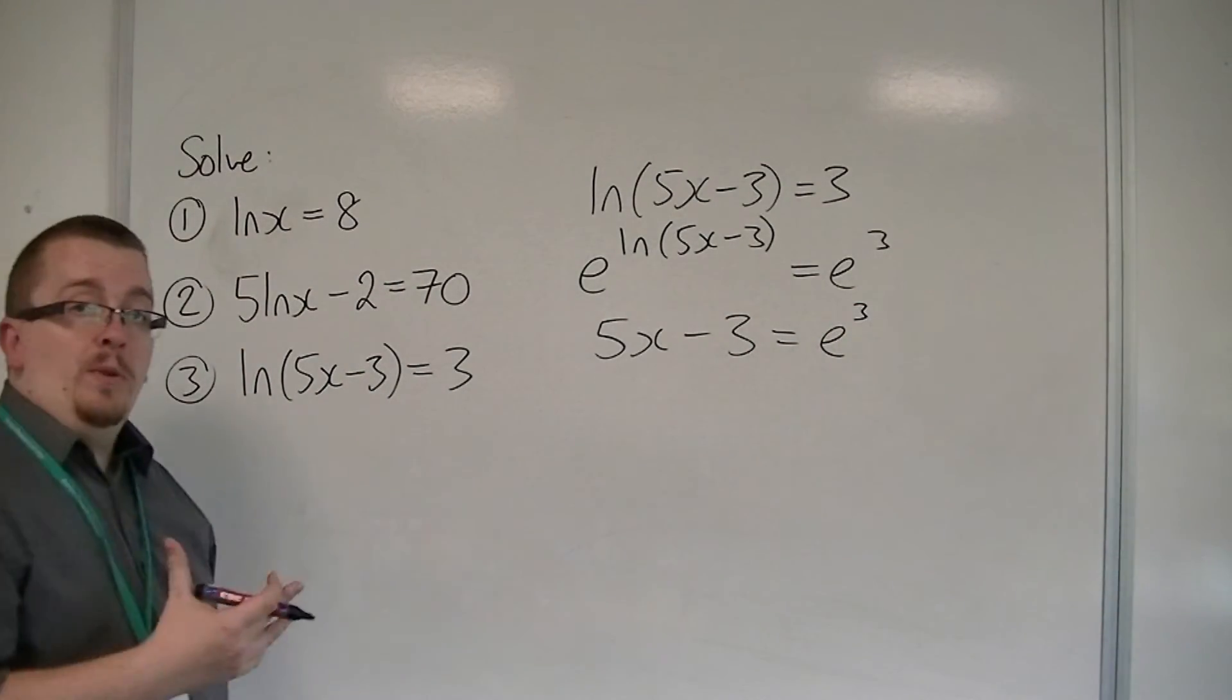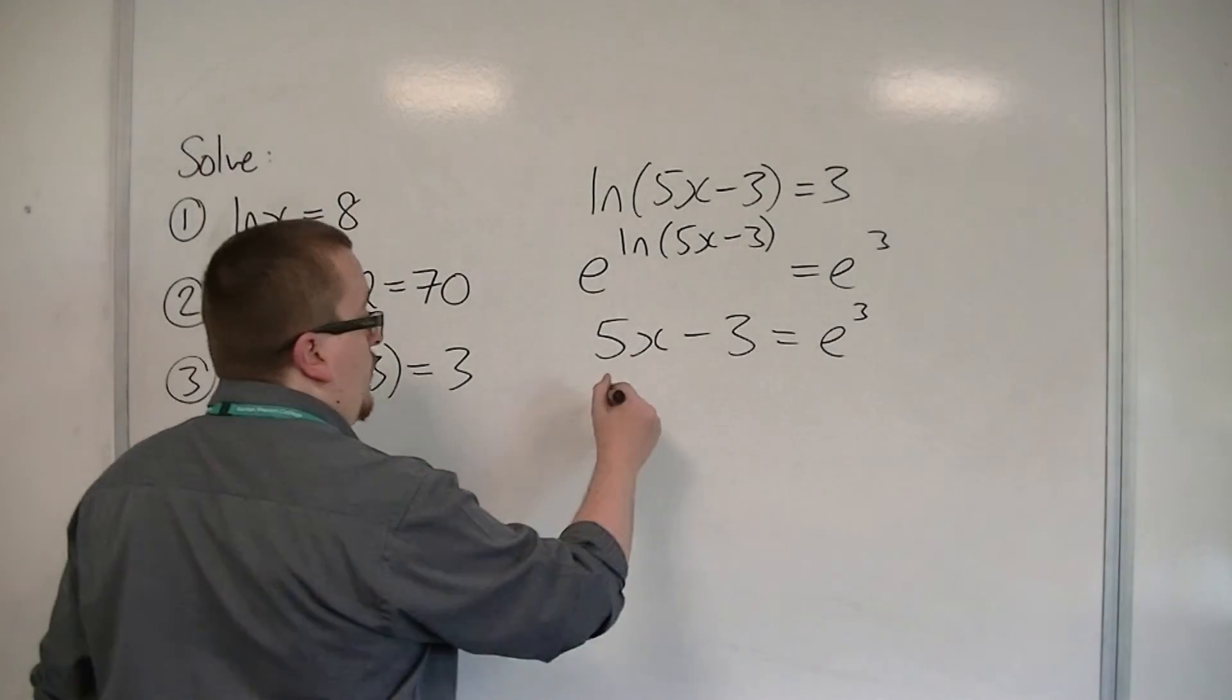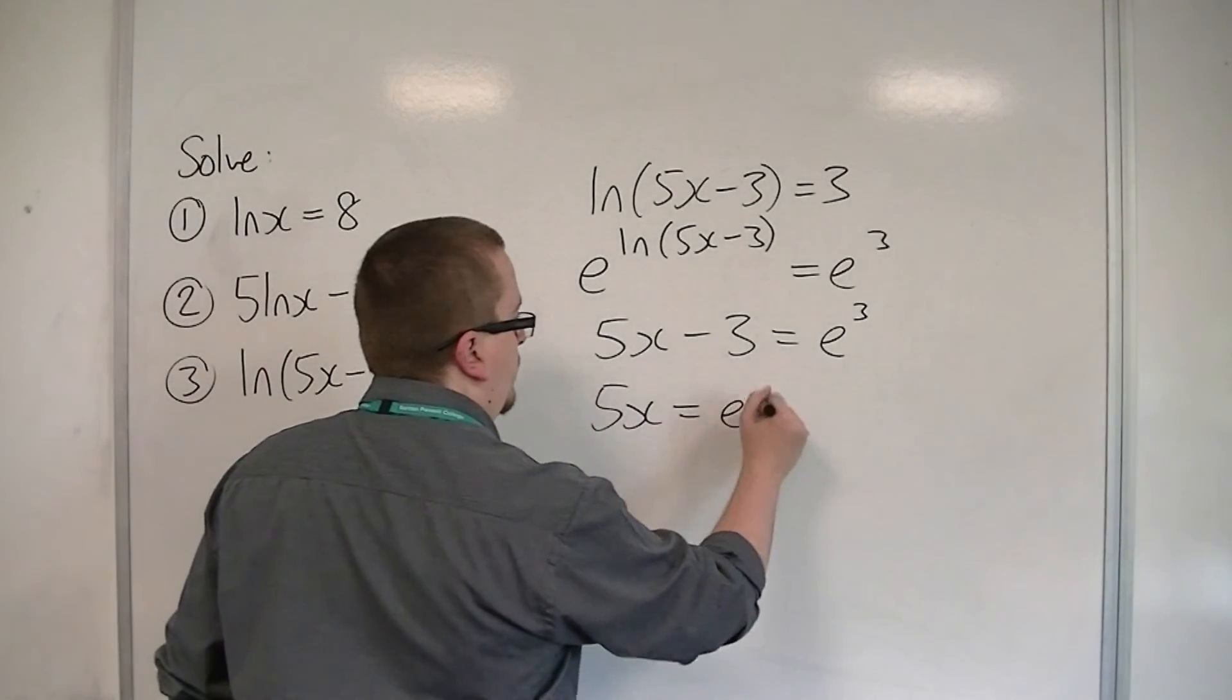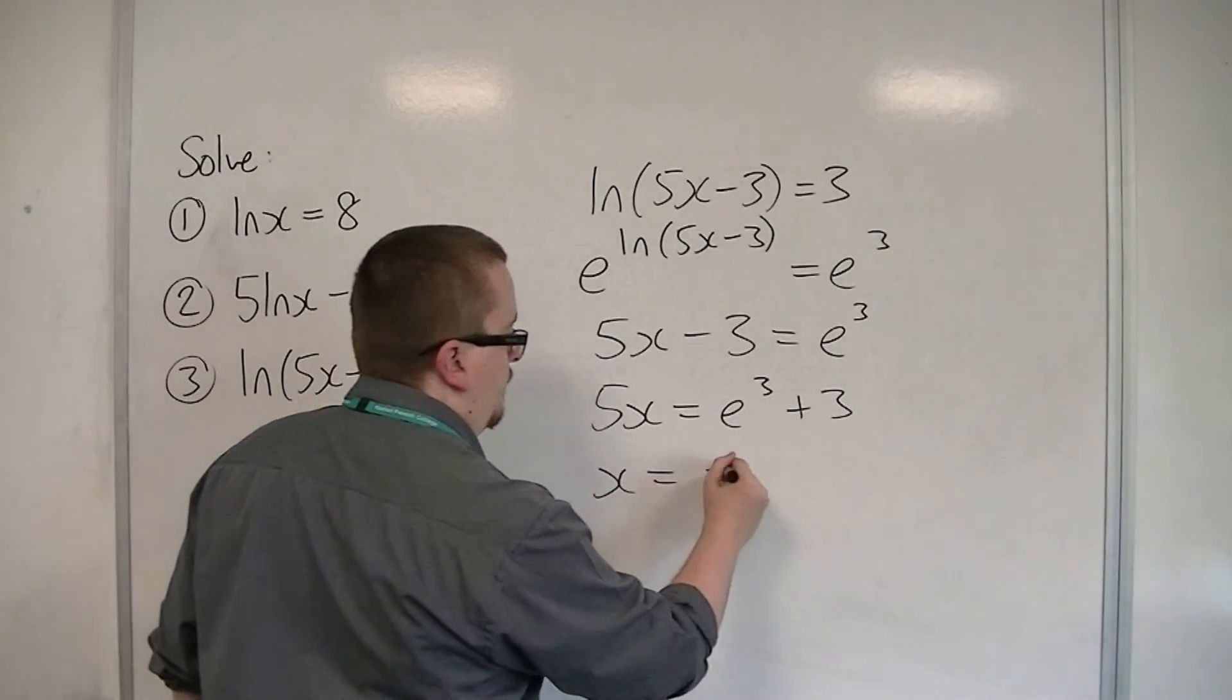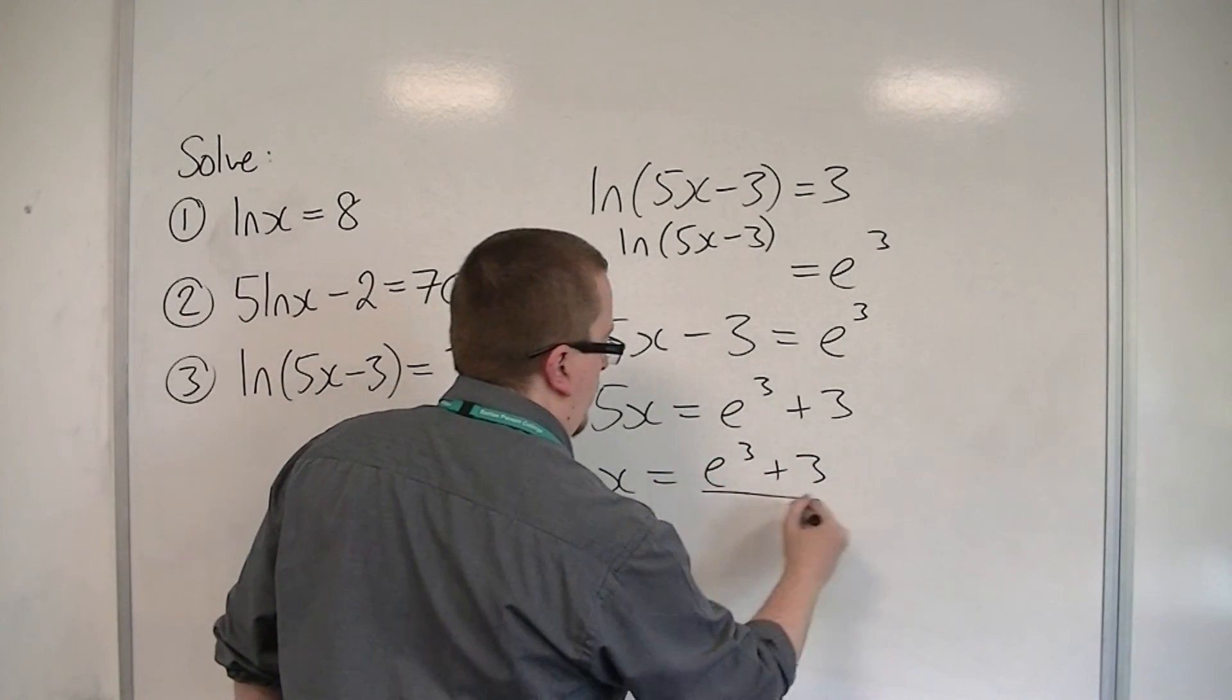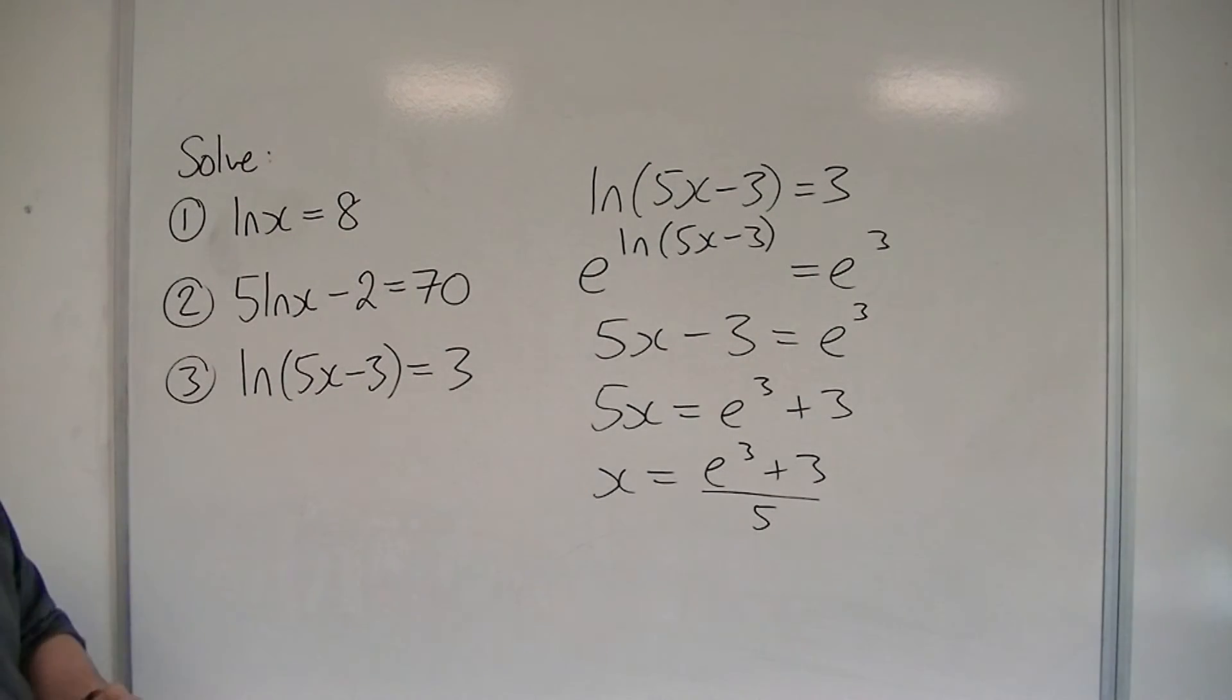So we've got 5x minus 3 is equal to e to the 3. Add the 3 to both sides, and then divide through by the 5. So that would be the exact answer.